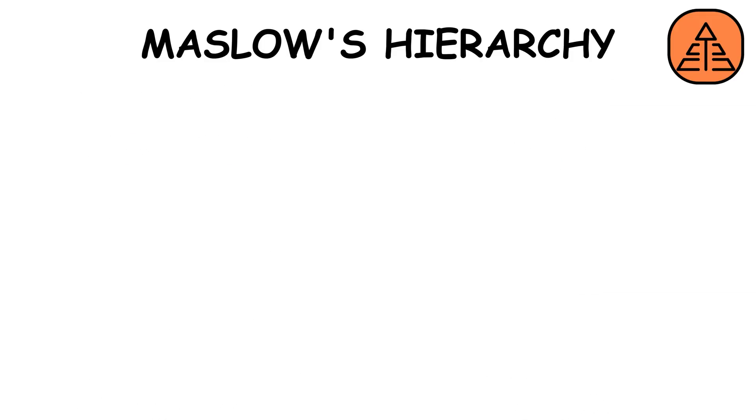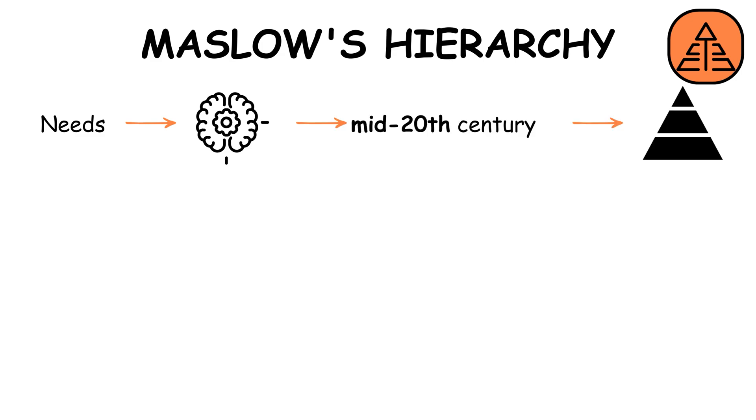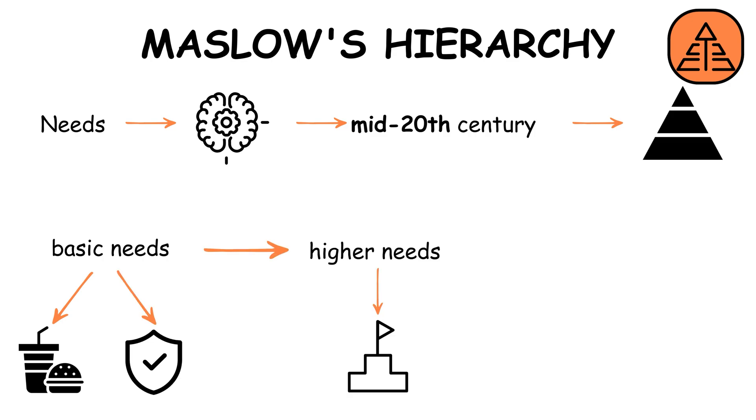Maslow's Hierarchy of Needs, conceptualized in the mid-20th century, arranges human needs in a pyramid. From basic needs like food and safety to self-actualization, it suggests that higher needs become motivational only after lower needs are satisfied.